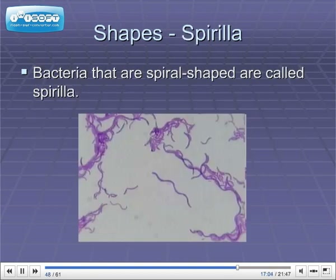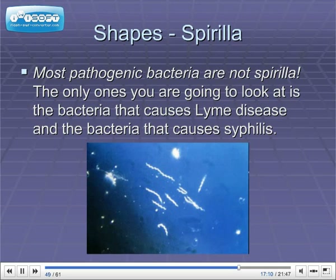Bacteria that are spiral-shaped are called spirilla. You can see some here — they look like little worms. Most pathogenic bacteria are not spirilla. Really, the only ones we're going to look at are the bacteria that cause Lyme disease and the bacteria that causes syphilis. So if you see spiral-shaped bacteria, that can really narrow down your options. In this class, we're mostly going to be talking about bacilli and cocci.